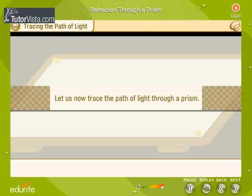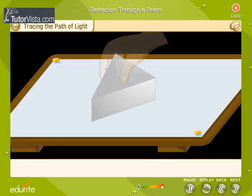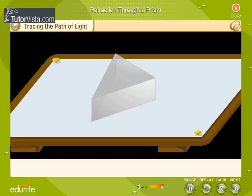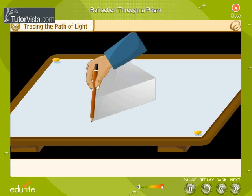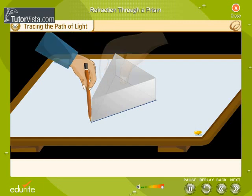Let us now trace the path of light through a prism. Place a prism on a white sheet of paper with a triangular face on the sheet and trace its boundary A, B, C.